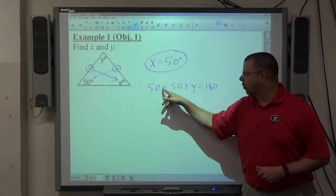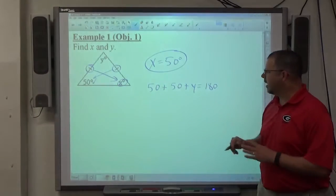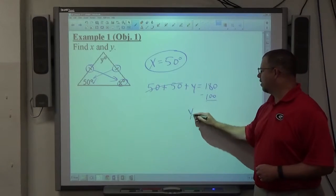I write an equation showing that all three angles that I know—this one, this one I found is 50, and this one—add up to 180. And then I solve the equation, move 100 over here, Y is equal to 80 degrees.